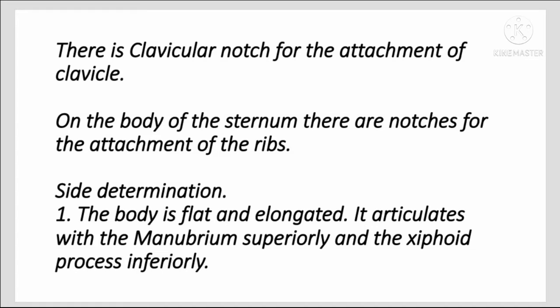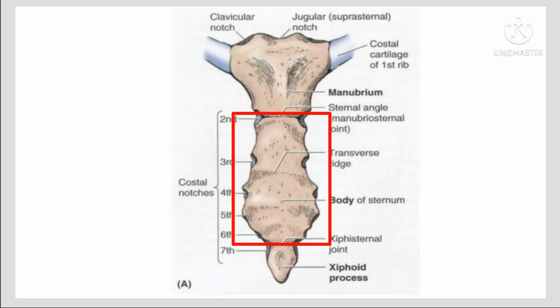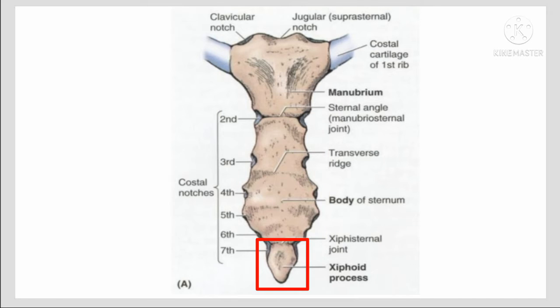The body of the sternum is flattened and elongated. It articulates with the manubrium superiorly and the xiphoid process inferiorly. This is the manubrium of the sternum, this is the body of the sternum, and this is the xiphoid process.